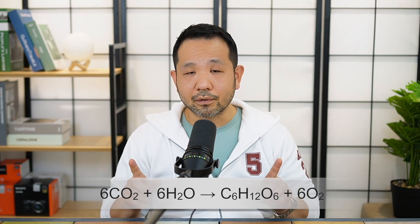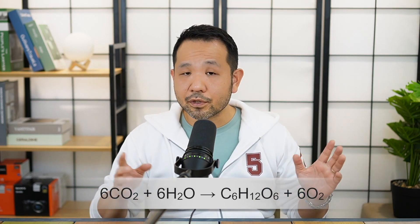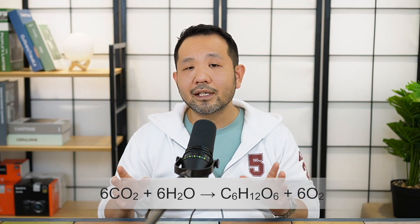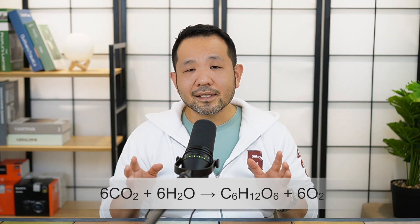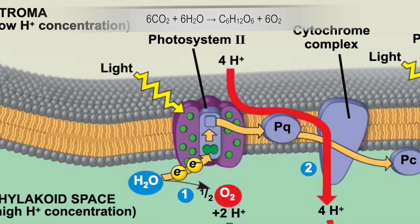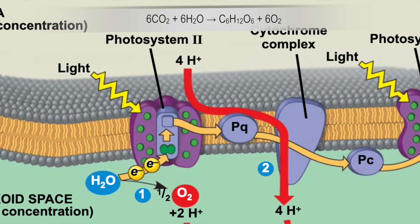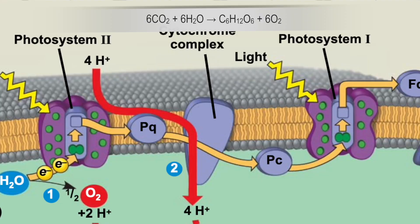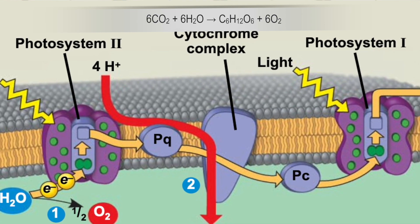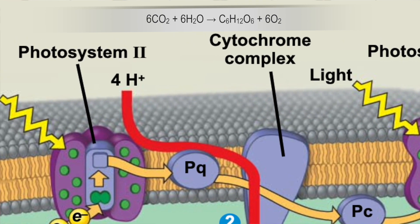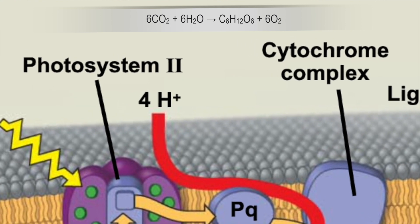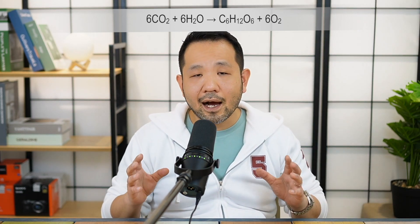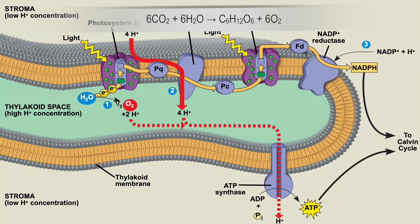Energy is the capacity to do work, as we learned in chapter 8. This electron's energy is going to be doing transport work, because as this electron is passed through the electron transport chain — through plastoquinone, through cytochrome C to plastocyanin — it's going to slowly drop in energy. Since energy cannot be created nor destroyed, the energy being released from the electron as it drops is going to be utilized to actively pump protons or hydrogen ions from the stroma into the thylakoid space, building a high concentration of protons on the inside of the thylakoid lumen.